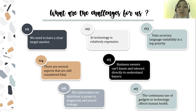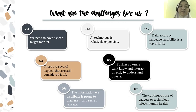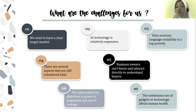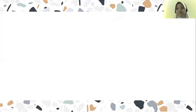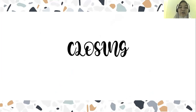Seventh and finally, the continuous use of gadgets or technology affects human health, such as feeling tired easily, visual disturbances, and damage to various organs. That covers the development of written communication in the era of the Industrial Revolution 4.0.